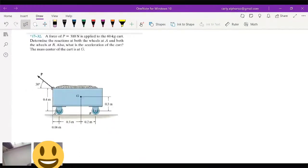So this cart is going to be a good example. Let's just play with it. A force P is applied to a 60 kilogram cart. Determine the reactions on both wheels A and B. So we need the reactions here and here. That's going to be our focus. What is the acceleration of the cart? So we need three things: A, B, and acceleration. Center of mass is at G.